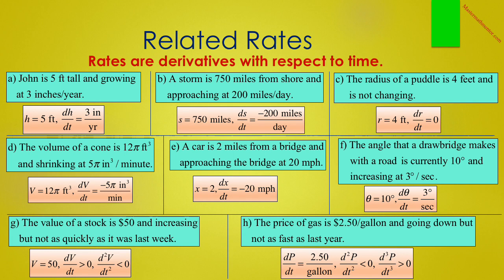G and H are trickier because they discuss changes in rates. We will discuss this fully when we get to the section on function analysis. G says the value of a stock is $50 and increasing, but not as quickly as it was last week. That makes V equal to 50, and since V is increasing, DV/dt is positive. However, if it is not increasing as quickly as it was last week, that means the rate of change of increase is getting smaller, and therefore the second derivative of V with respect to time is negative.